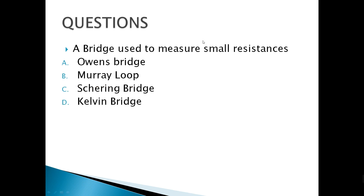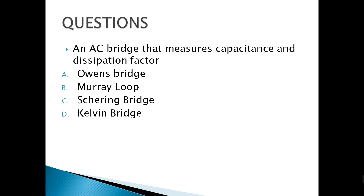A bridge used to measure small resistances — we use the Kelvin bridge. The Wheatstone bridge is for general resistances, and the Kelvin bridge is a modified Wheatstone bridge for small resistances. An AC bridge that measures capacitance and dissipation factor is called the Schering bridge.